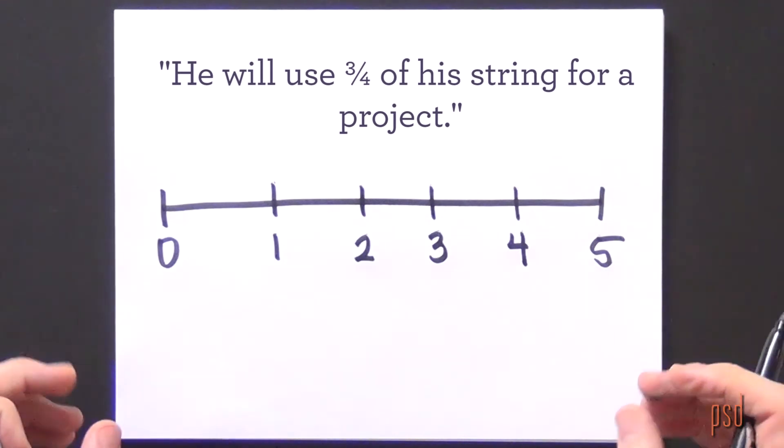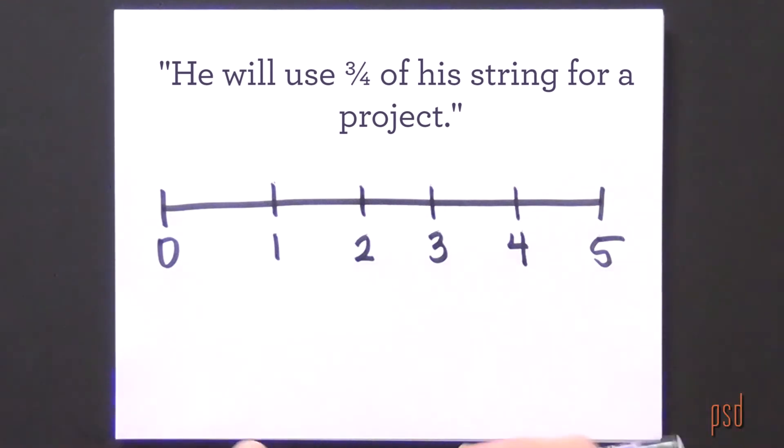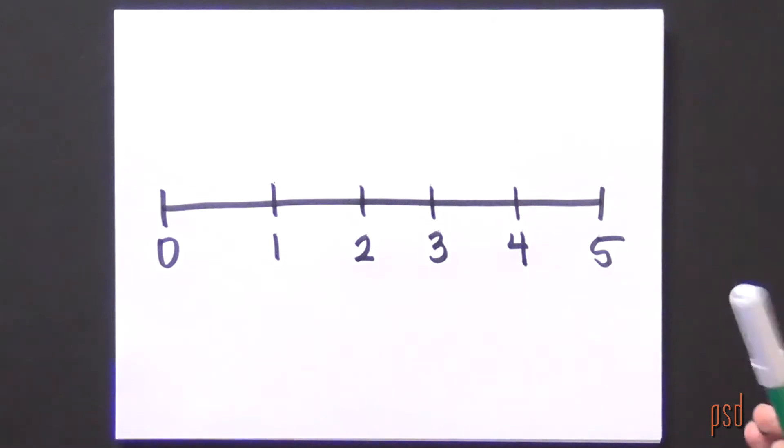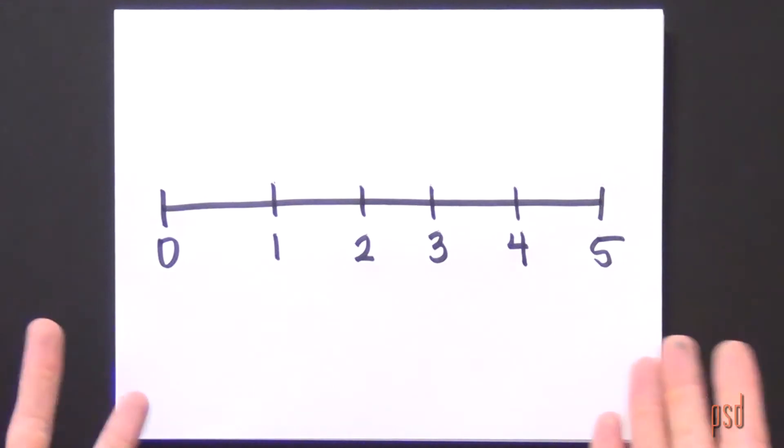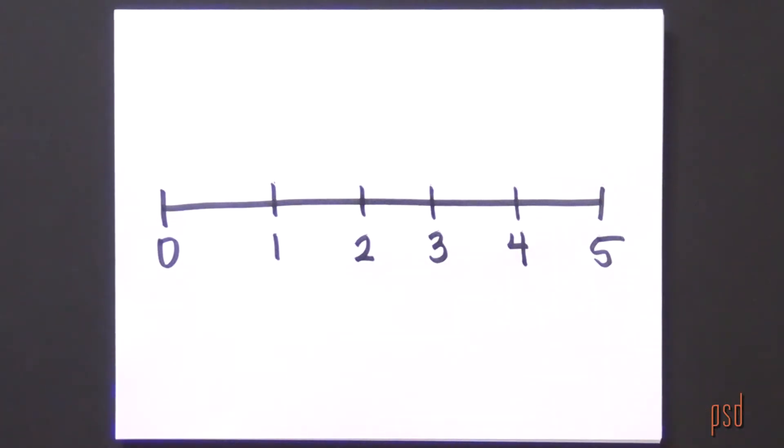The question says that he uses three-fourths of his string for a project. Allow your students time to struggle with this. I'm asking them to represent three-fourths of five on a number line, and there is no way right now to clearly represent fourths because it's broken into five equal parts.